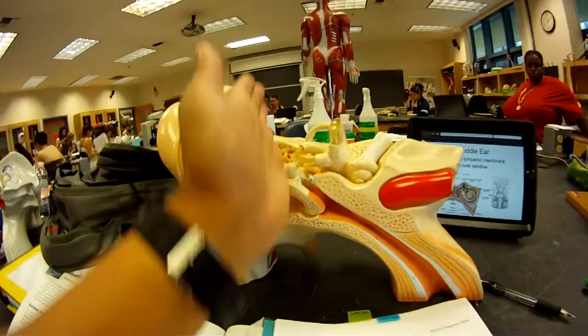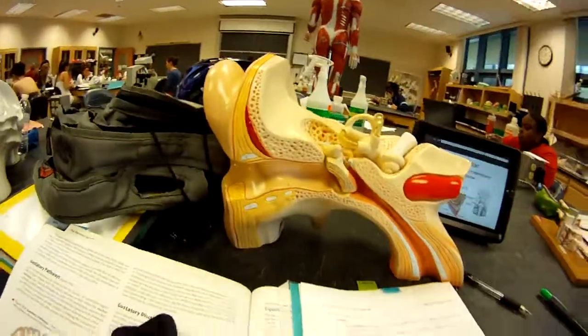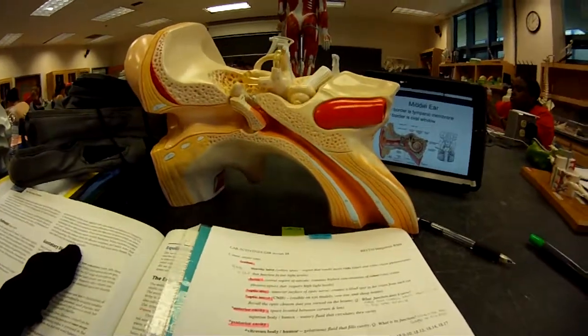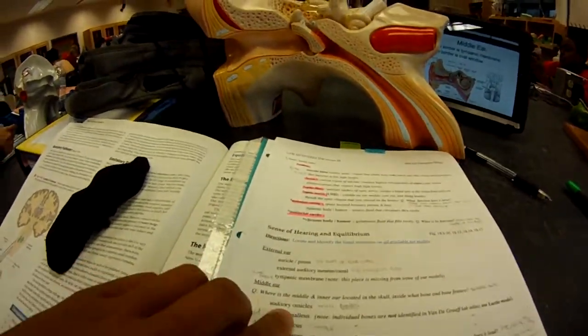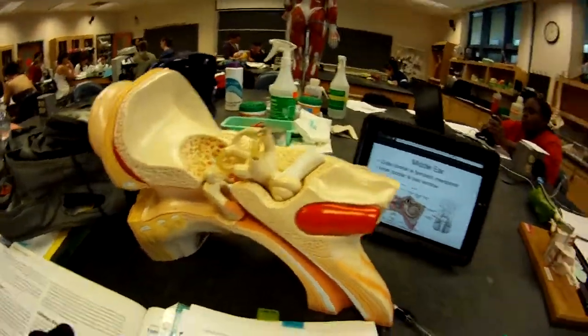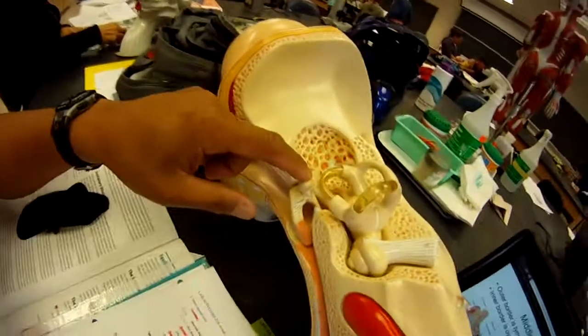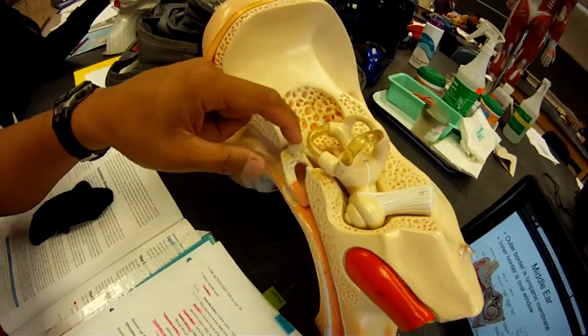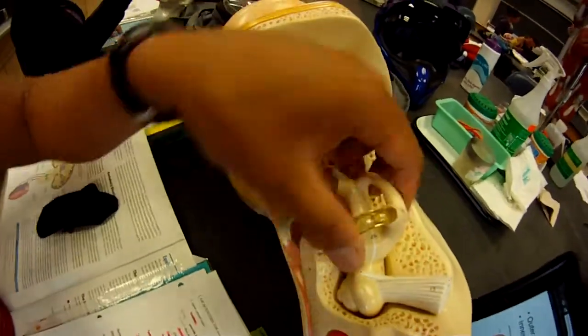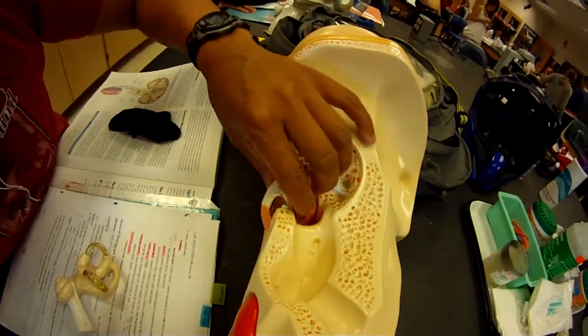The auditory ossicles, which means the three inner bones in the ear. One of them is missing, but this is the malleus. Take this off - the incus, and the stapes is missing.